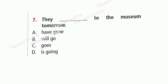Question 7: They dash to the museum tomorrow. The action hasn't happened yet and will happen tomorrow, so this is future tense. They will go. Option B is correct.